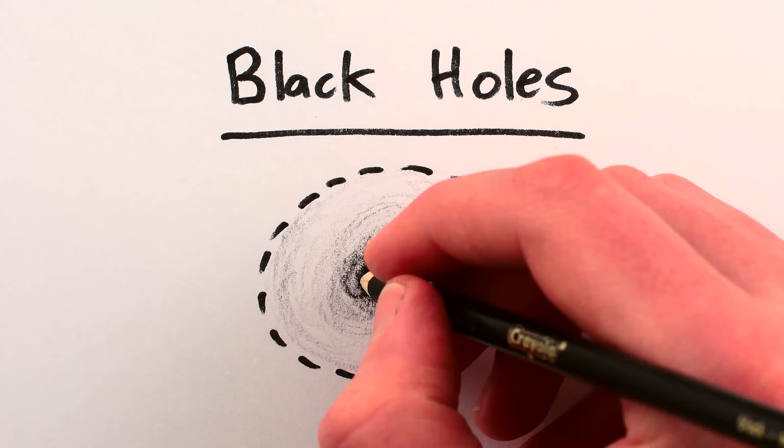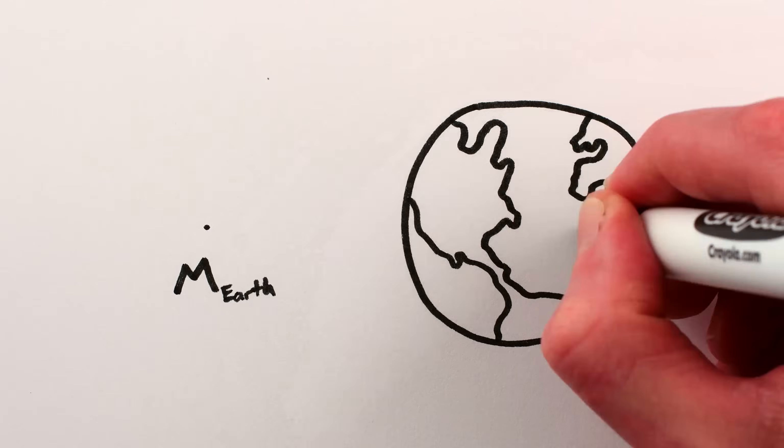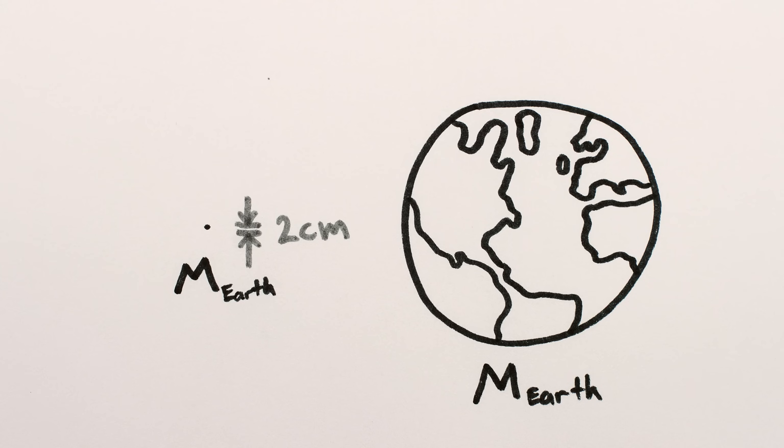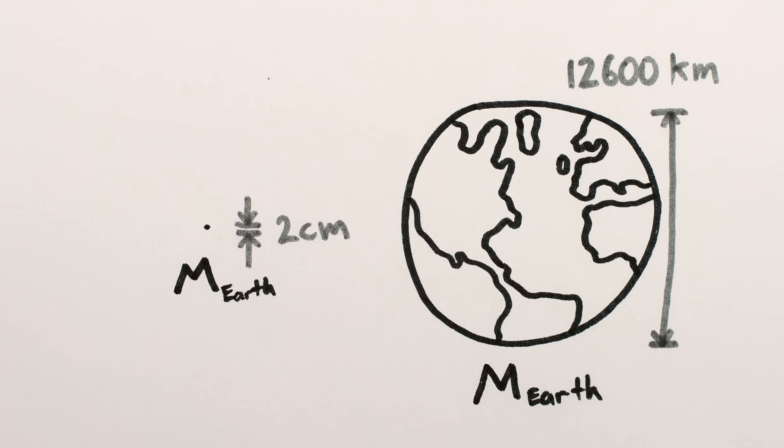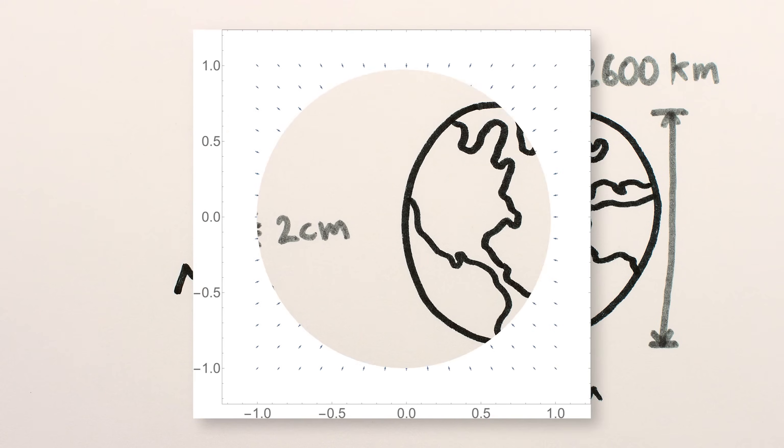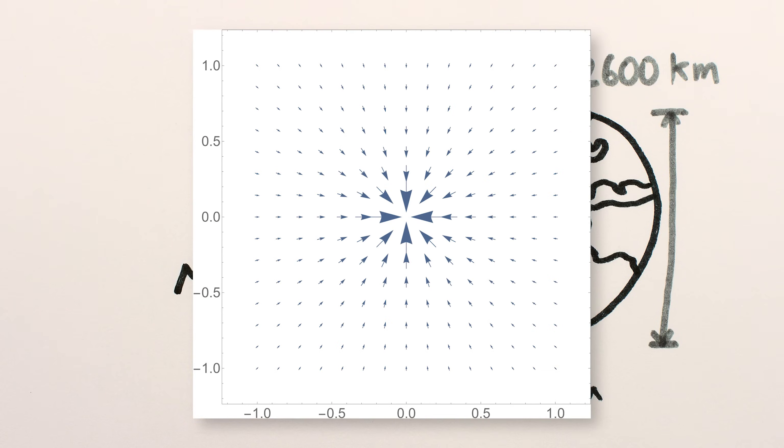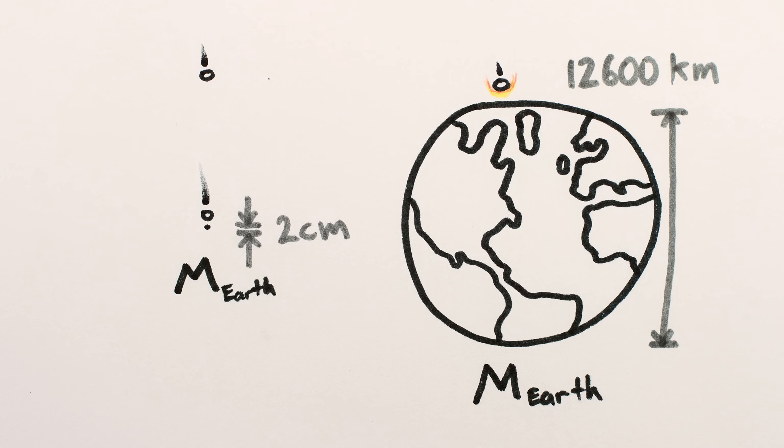But black holes have something special going for them. They are stupendously small. A black hole with the mass of the Earth would be about 2 centimeters across, providing way farther for an object to fall. And since gravity gets stronger and stronger the closer you are to an object, objects falling into black holes get accelerated to ridiculous speeds.